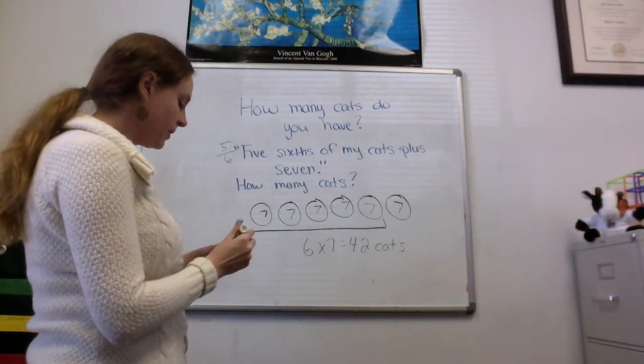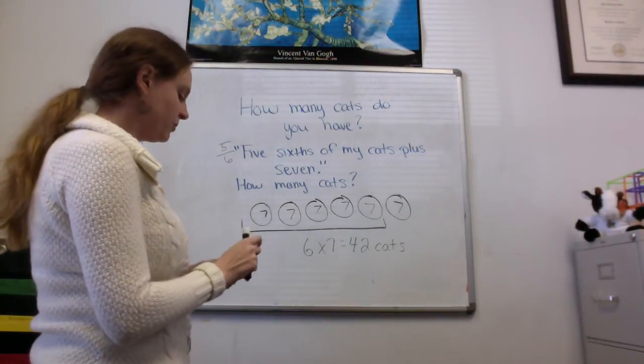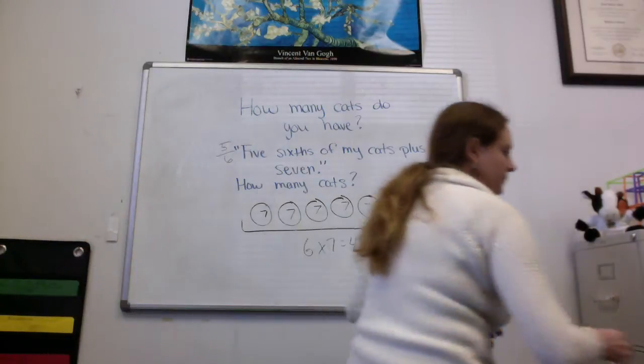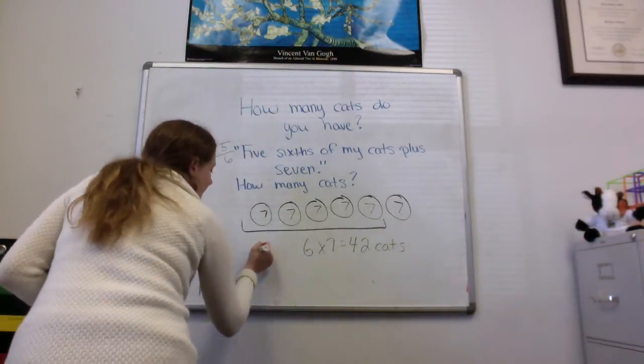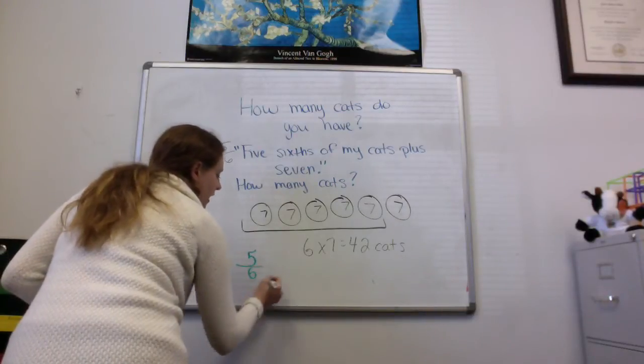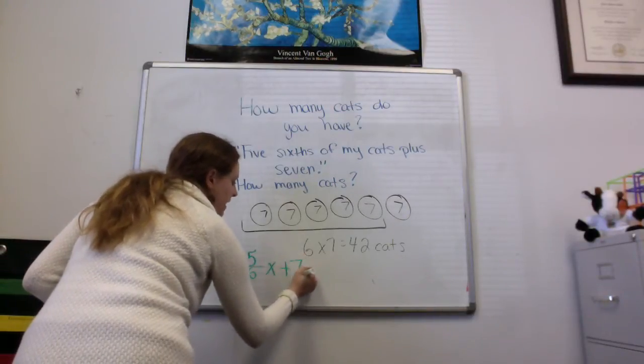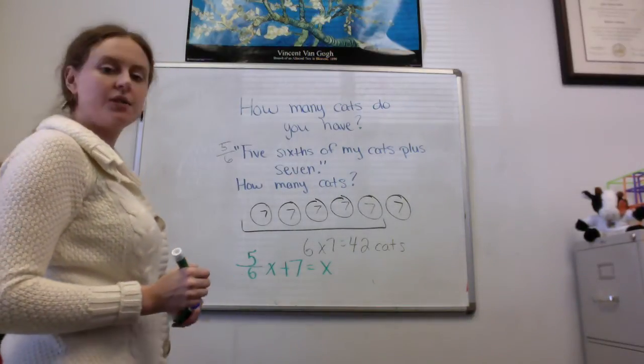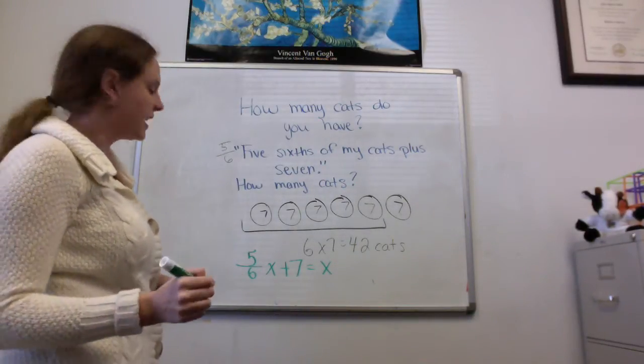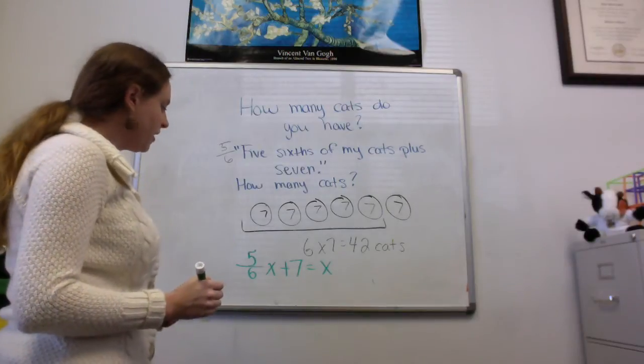Another way to work this same problem is to think about it algebraically, so to make an equation. So I could say 5/6 of my cats plus 7 has to be equal to my number of cats. And use x there to represent my cats, the thing I don't know. I'm going to solve this for x.